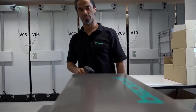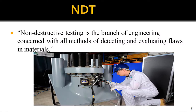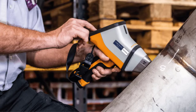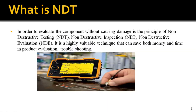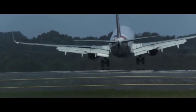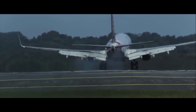Non-destructive testing is a branch of engineering concerned with all methods of detecting and evaluating flaws in materials, allowing you to detect defects using various types of NDT methods. Sometimes these methods are called non-destructive testing, sometimes non-destructive inspection, and sometimes non-destructive evaluation. It is a highly valuable technique that can save both money and time in product evaluation and troubleshooting. NDT has been used in various industries like mechanical, civil, chemical, biomedical, aerospace, automobiles, and many more.